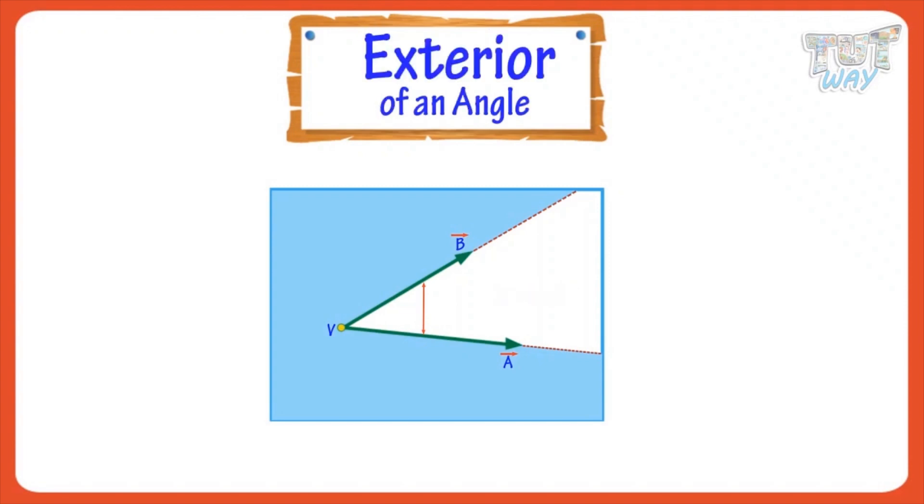Exterior: It is the space outside the two straight lines. It extends even beyond the ends of line segments. Here, the area marked with blue is the exterior of the angle.